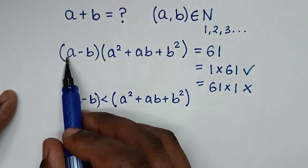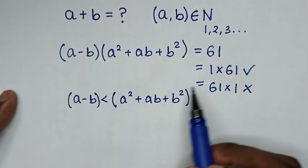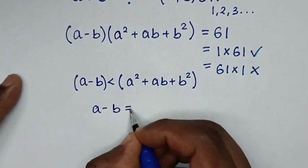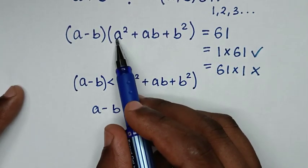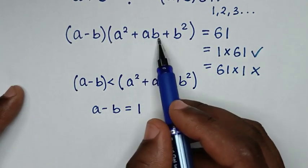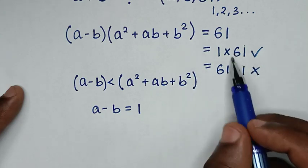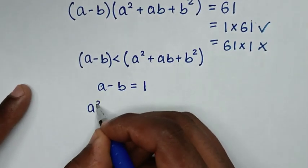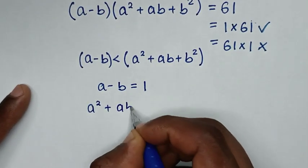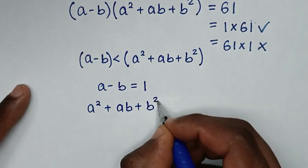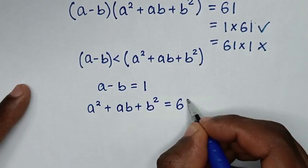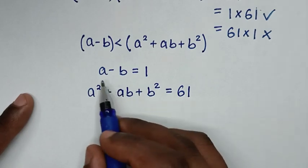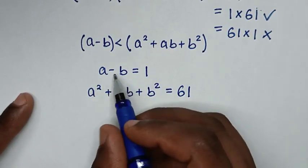Comparing the two factors, we conclude a minus b is equal to 1, and a² plus ab plus b² is equal to 61. So we now have these two equations to work with.